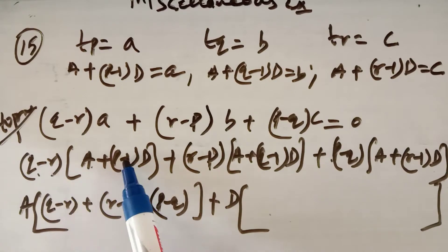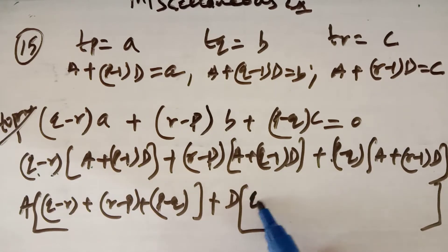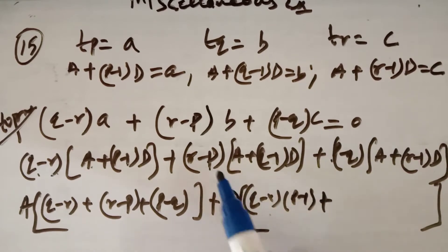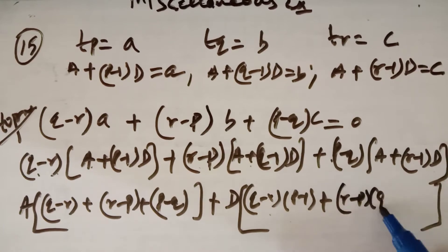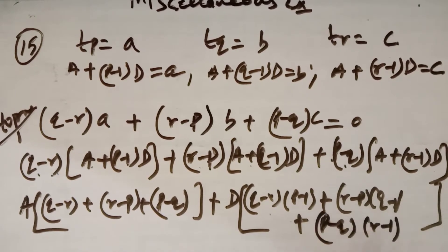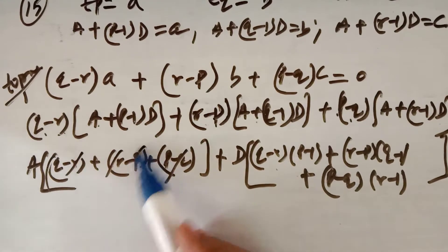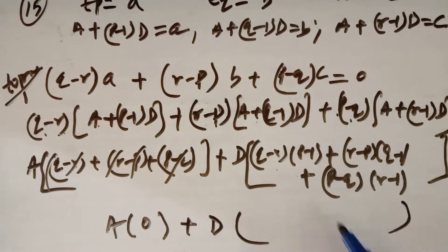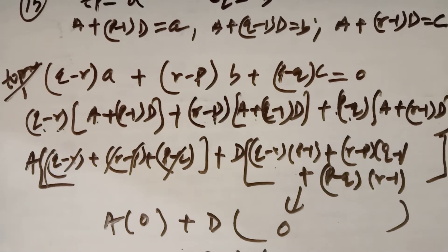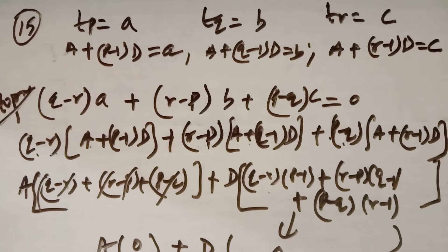The terms containing D will be (q−r)(p−1) + (r−p)(q−1) + (p−q)(r−1). When you open these brackets, the terms cancel and you also get 0. So it is equal to the right-hand side. This completes question number 15, where we let the first term of the AP as capital A and common difference as capital D.